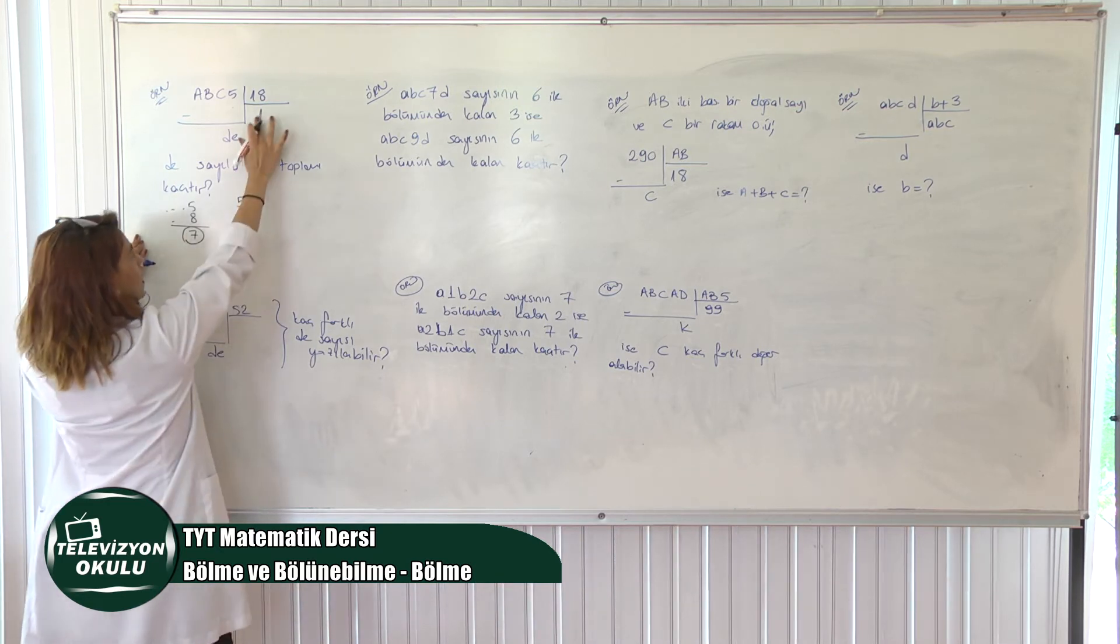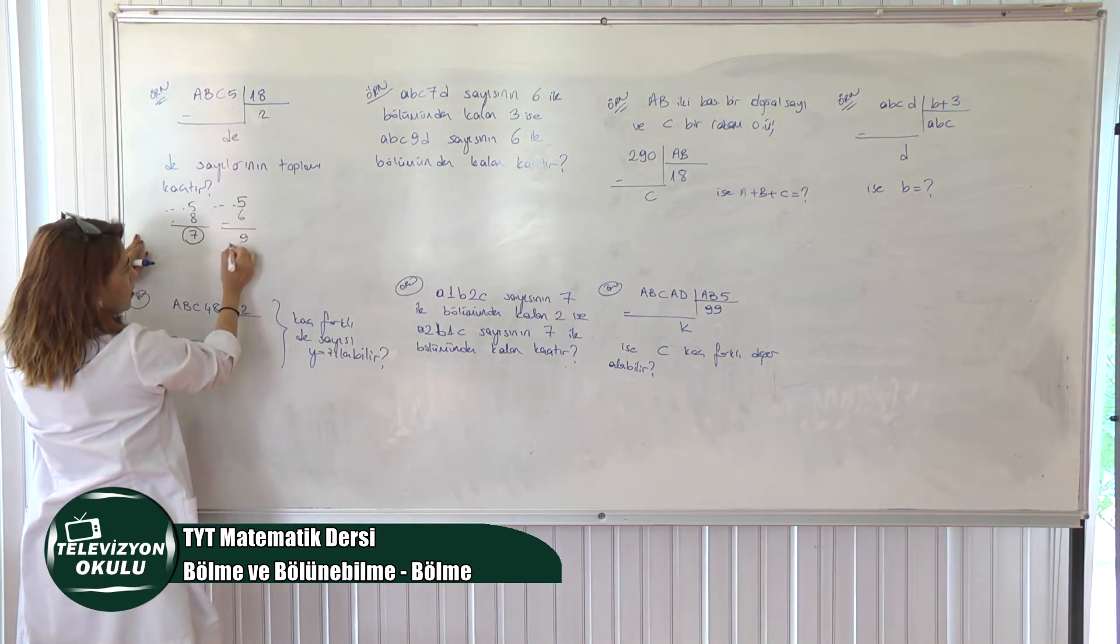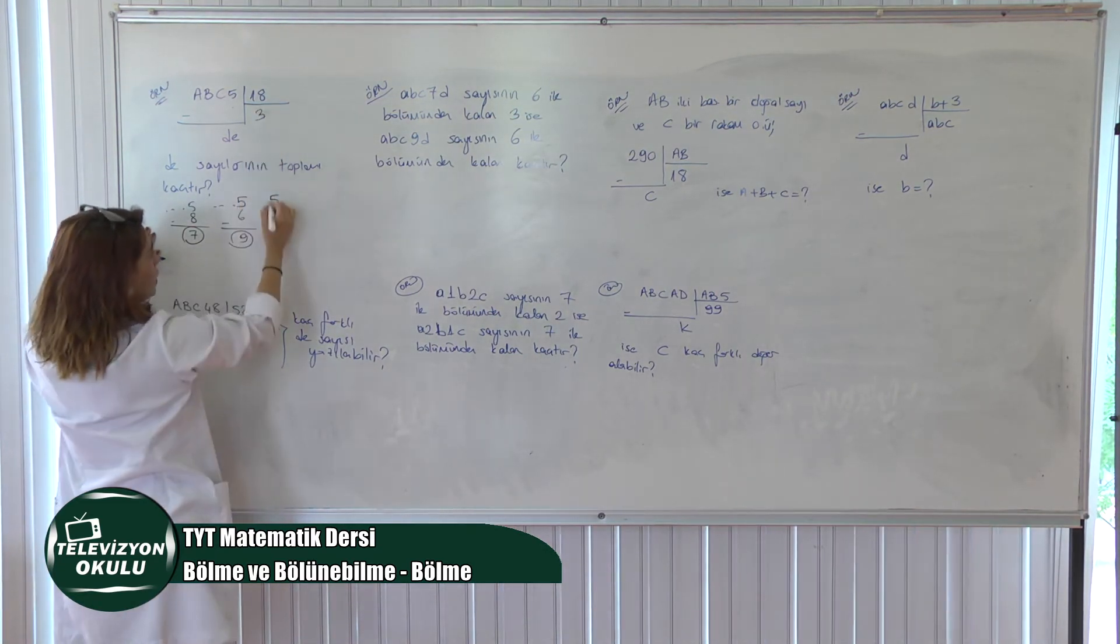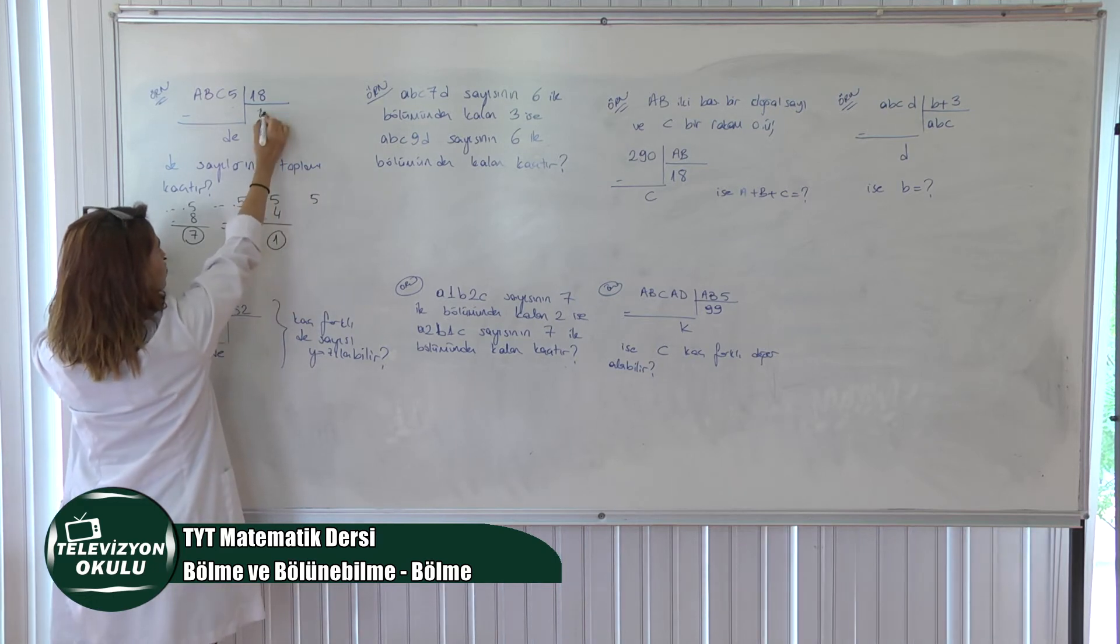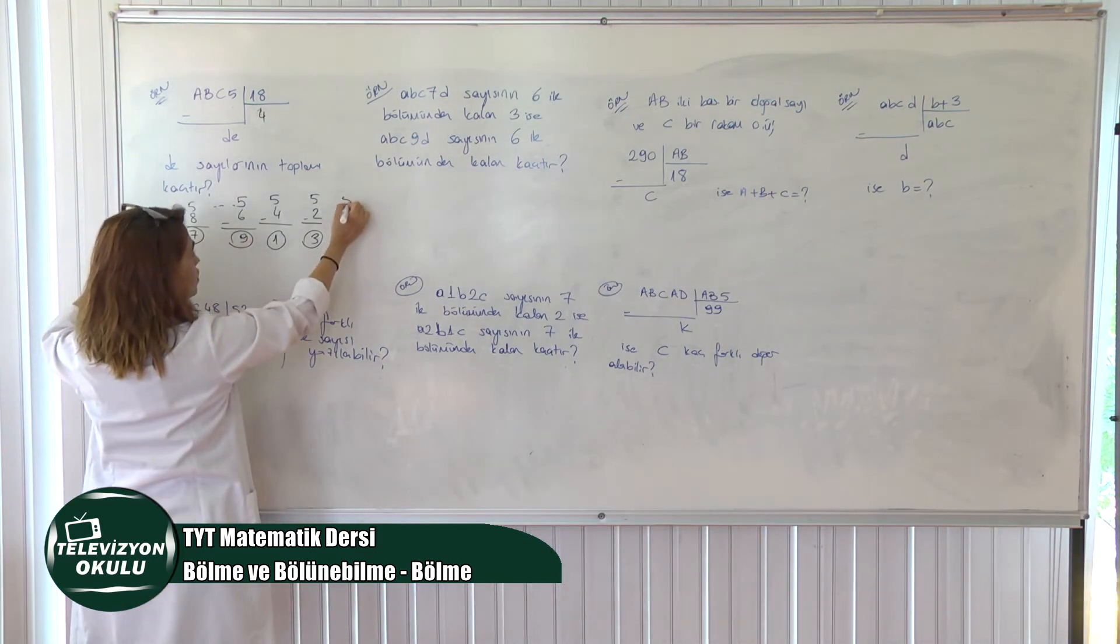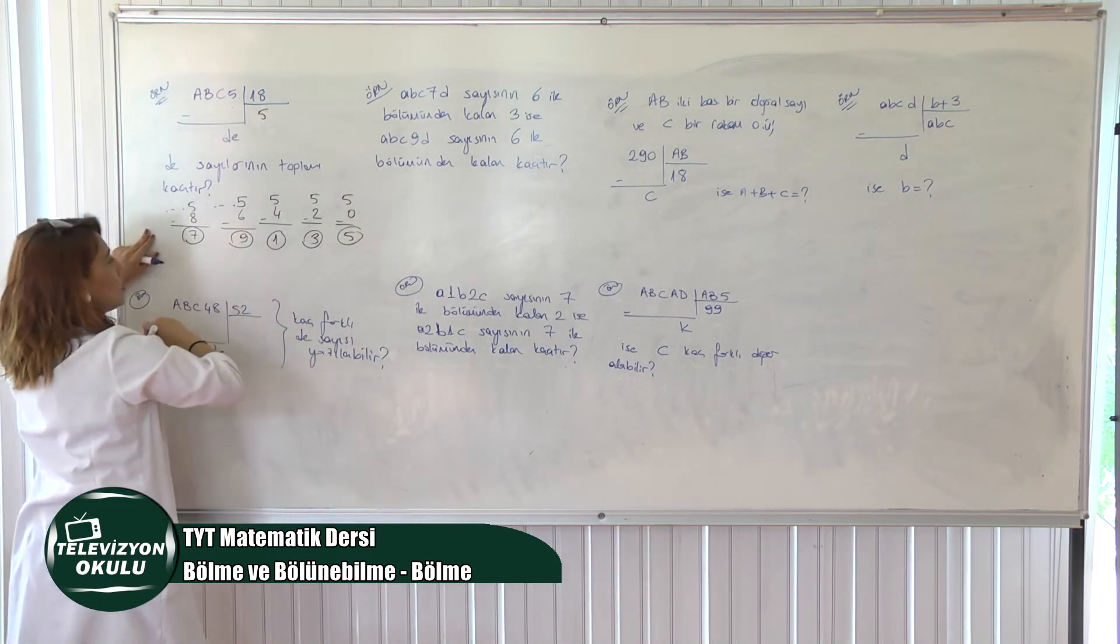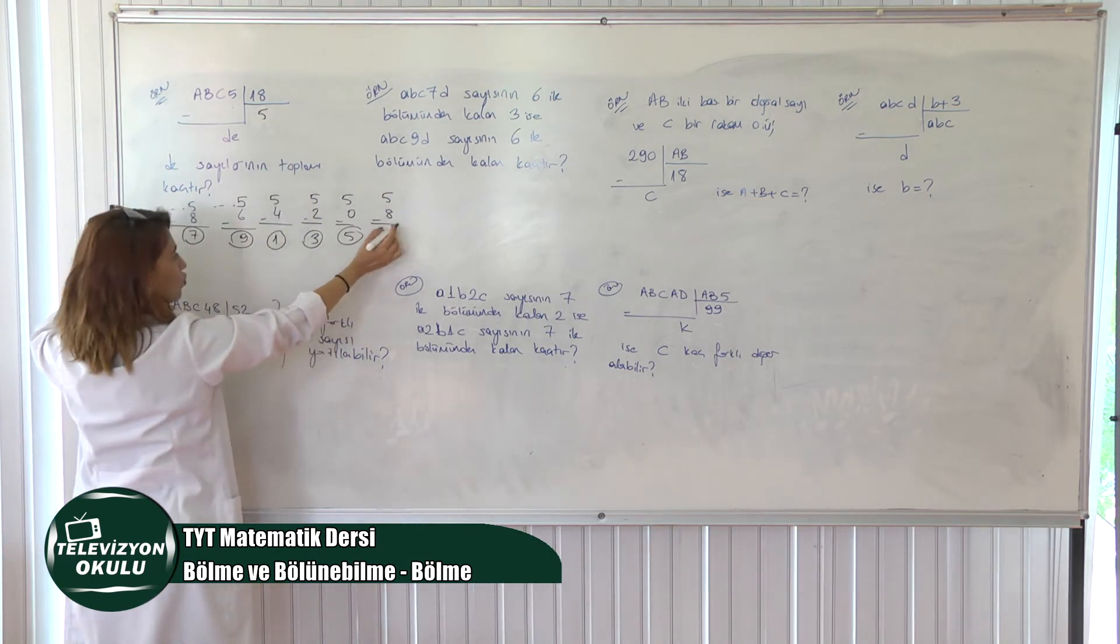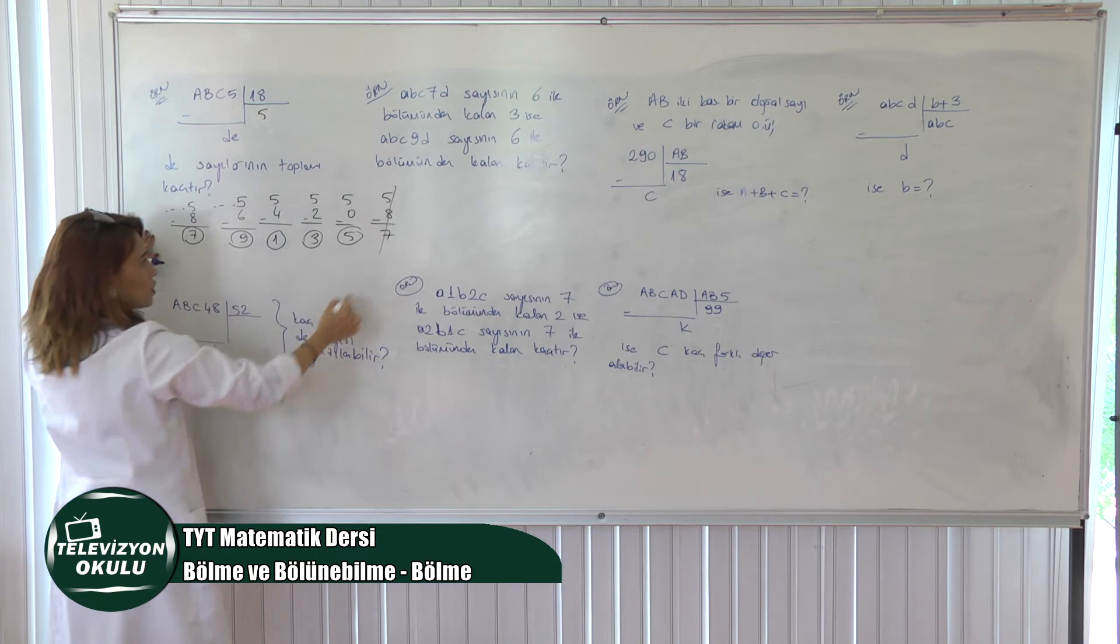Peki, 2 kez var dediğimde ne olur? 2 kere 8, 16 olacağı için 6 ile biter. Peki, 15'den 6 çıktı. Neyle biten sayılar olur? 9 ile biten. 3 kez var dediğimde, buraya 3 yazdığımda, 24, 4 ile biten sayılar olur. Burası 1 ile biter. 4 kez var dediğimde, 4 kere 8, 32 olduğu için 2 ile biten sayılar olur. Yani 3 ile biten sayılar alırım derim. 5, buraya 5 dediğimde, sonu 0 ile biter burası. Yani sonu 5 ile bitenler olur. Bir de 5, buraya 6 dediğimde, 8 ile biten, yani 7 ile bitenlere döndük. Bakın başa döndük. 1, 3, 5, 7, 9 ile biten sayıları alacakmışız. Burada başa döndüğümüz için.